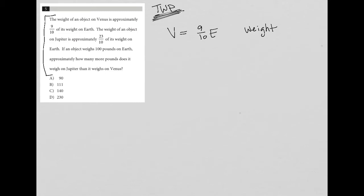The weight of an object on Jupiter is approximately 23 tenths of its weight on Earth. So J for Jupiter is equal to 23 tenths E, with regard to weight.